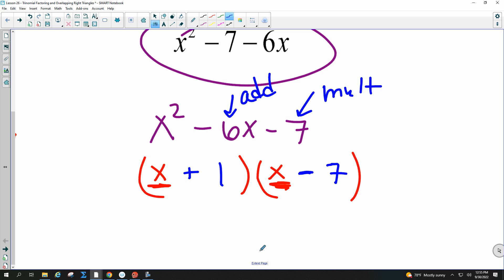So when you put it in order, the order does not matter. So you could have x minus 7 and then x plus 1. That's the same thing. That is all the work you need to show. This should be not a lot of work.